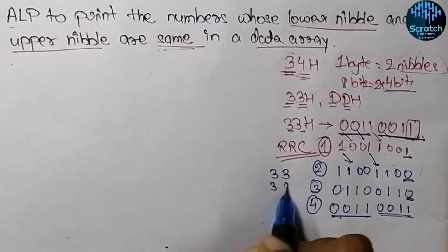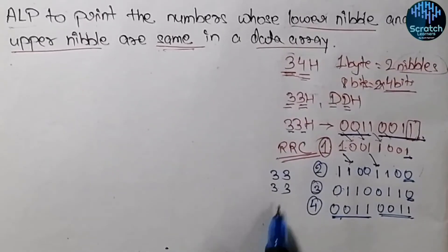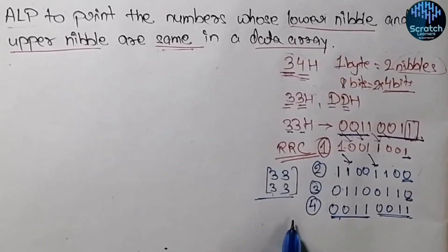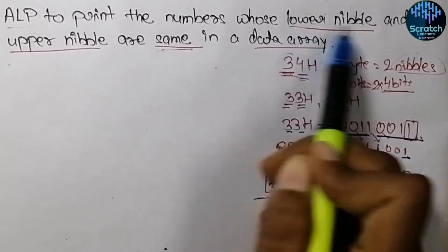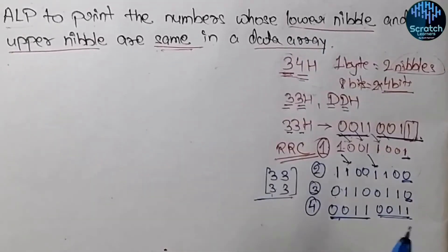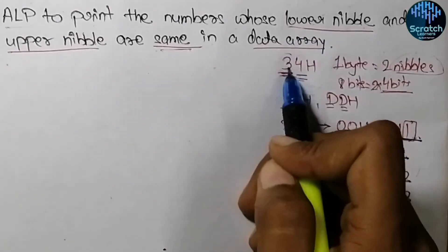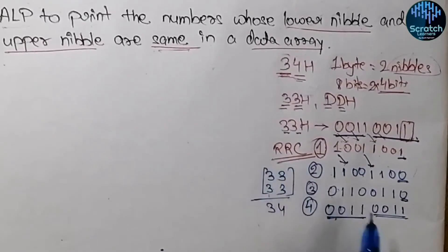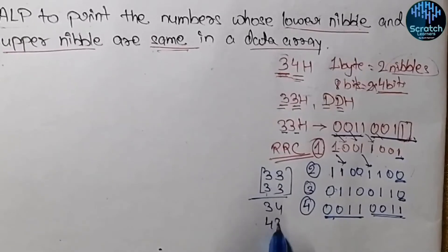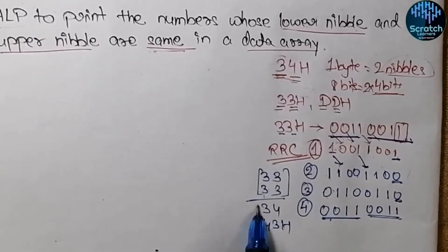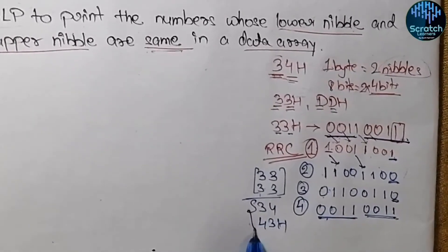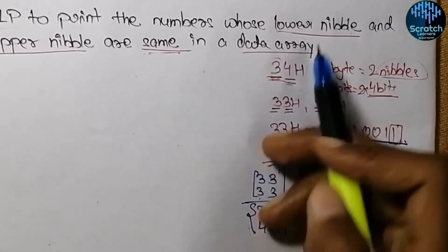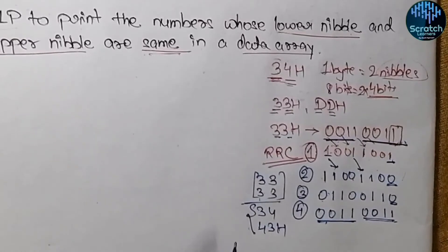If both nibbles are the same, then after rotating 33 hex four times we will get the same data back. We can then compare the two values to check equality. However, if we take 34 hex, rotating it four times gives 43 hex, and comparing shows they are not equal — so the lower and upper nibbles are not the same.